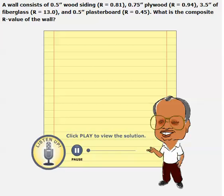This problem, we need to calculate the composite R value. The wall consists of four layers.